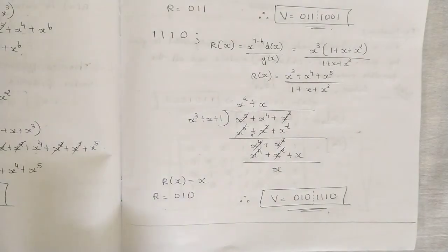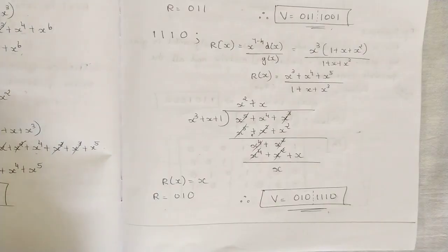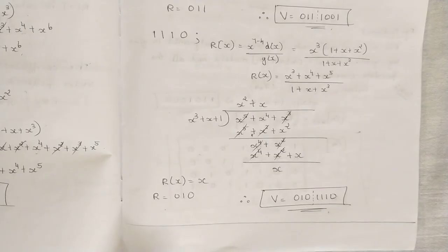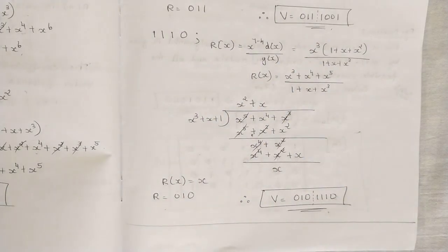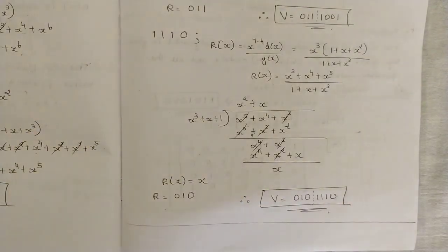The second message 1110 in systematic form follows the same procedure — pause the video to work through it. That's all for this video. We have discussed the concepts related to cyclic codes. In the next video we'll discuss how the generator polynomial is formed with respect to cyclic codes. Thank you.